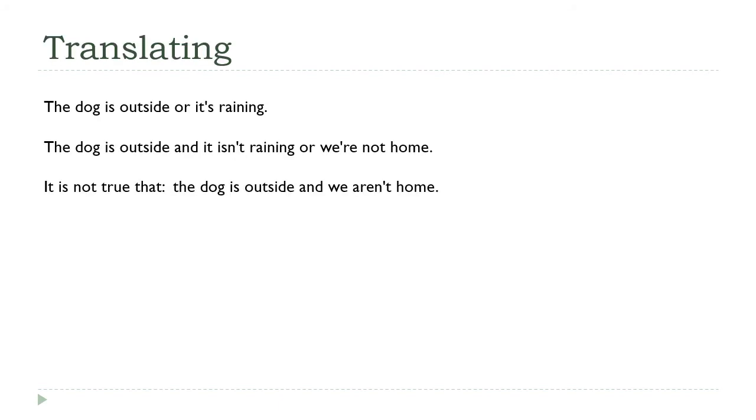All right, so let's look at some more examples here, get a little practice translating English statements into symbolic statements. And the first thing we need to do is kind of pick out the individual statements here. So here I have a statement about the location of the dog. So we'll start there. I'll let p be 'the dog is outside.' Then I'm just going to kind of keep reading.